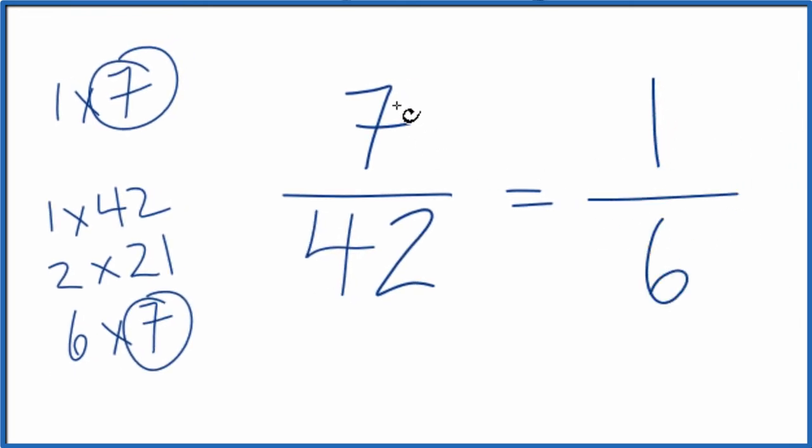And we've simplified the fraction 7/42 down to 1/6. We can't reduce this any further. These are equivalent fractions. 7 divided by 42 and 1 divided by 6 - they'll give you the same number. This is Dr. B. Thanks for watching.